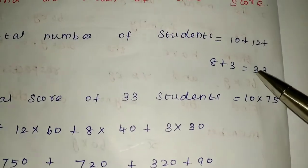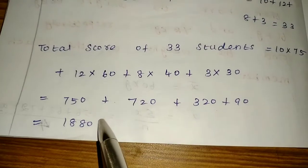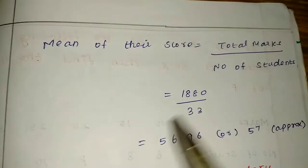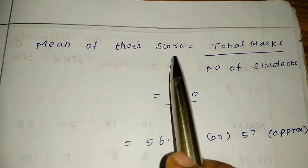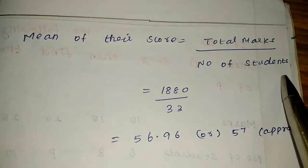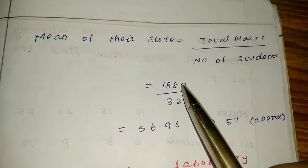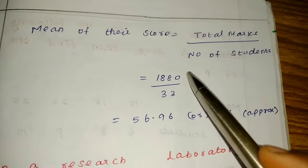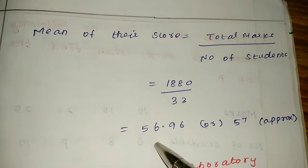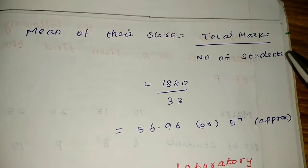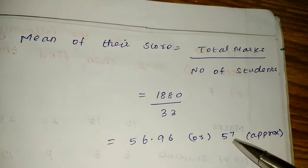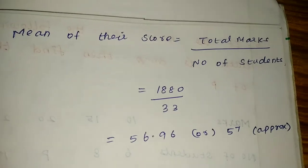Okay, so we know the total number of students and total score of 33 students. Now let's find the mean. Mean of the scores equals total marks by number of students. Total marks is 1880, number of students is 33. So when we divide this, we get 56.96. We can write this as 56.96, or we can round off to 57 and write it as approximately 57.